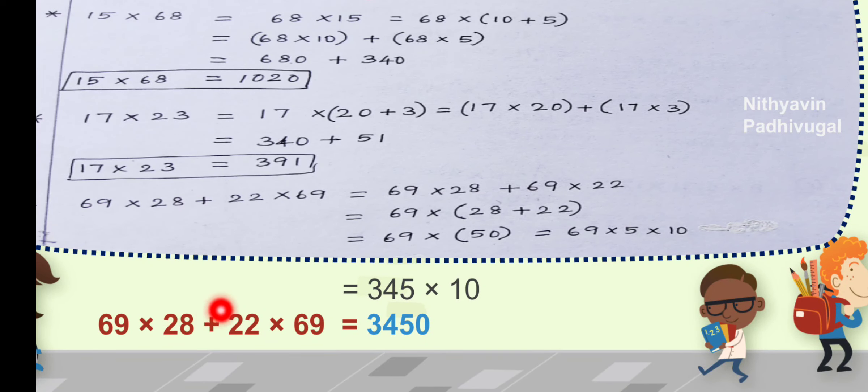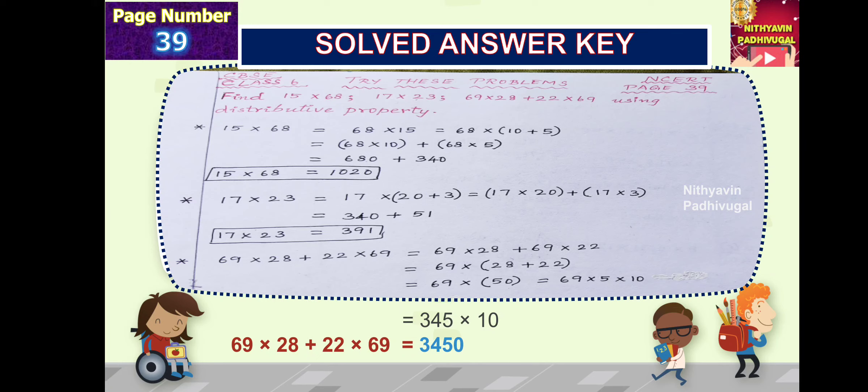This is the answer for 69 multiplied by 28 plus 22 multiplied by 69. You should not add 28 and 22 first. This is the addition of 2 terms. One term is 69 into 28 and the another term is 69 into 22.